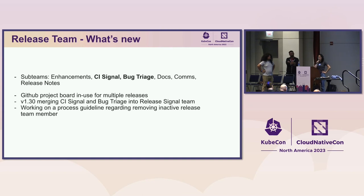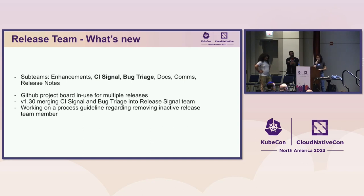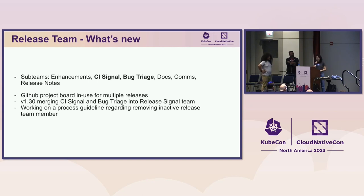Let's get a little meta and talk about what we're thinking about inside the team. Before 1.26, we used a giant monster Excel sheet to track all of our enhancements — it got close to about 100 enhancements. In 1.26, we migrated to the GitHub project board, and that worked really well. In fact, we are now merging the bug triage team into a new team called the release signal team, which will handle the stability of tests and bugs in the release.